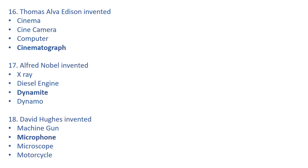Alfred Nobel invented dynamite in 1867. He belongs from Sweden. Dynamo converts mechanical energy into electrical energy. Diesel engine was invented by Rudolf Diesel of Germany in 1892. Dynamite was invented by Michael Faraday of England in 1831. X-ray was invented by Wilhelm Röntgen of Germany in 1895.